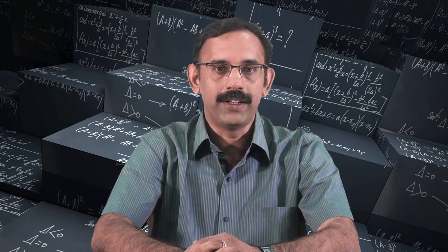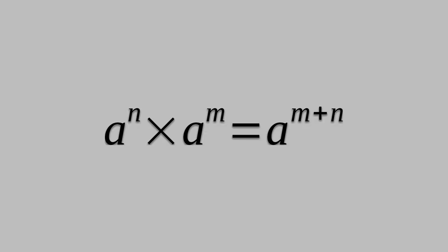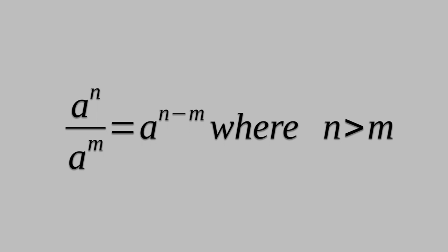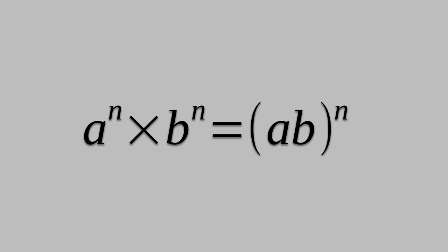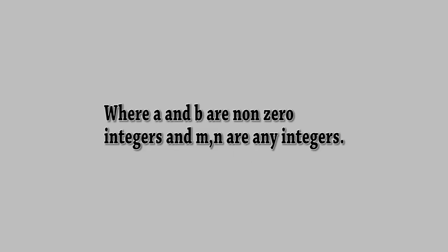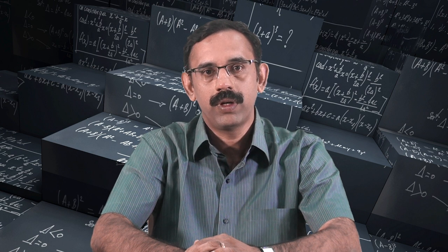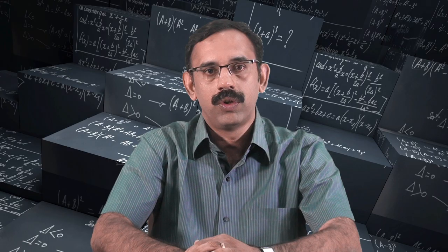Let us recollect what we learned in today's class. We extended the laws of exponents to integer exponents: a raised to n times a raised to m equals a raised to m plus n; a raised to n divided by a raised to m equals a raised to n minus m; a raised to m whole raised to n equals a raised to mn; and a raised to n times b raised to n equals ab whole raised to n, where a and b are non-zero integers and m and n are any integers. We also saw that if a is not equal to 1 or minus 1, a raised to n equals 1 implies n equals 0, and learned how to write very large and very small numbers in standard form.